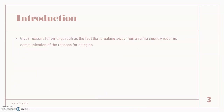First, the introduction. It basically gives the reasons for writing — why are they breaking away from the ruling country? It communicates those reasons for doing so, like why exactly they are breaking away from Great Britain. This also goes back to American history ideals, and why exactly did they break — what was their turning point?